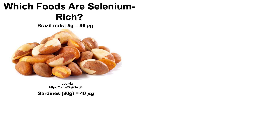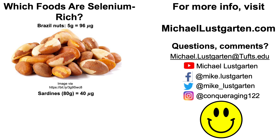As for selenium-rich foods: Brazil nuts are the best source, with about 19 micrograms per gram. I eat one large Brazil nut, about five grams per day, providing roughly 96 micrograms. I also eat 80 grams (one tin) of sardines daily, contributing about 40 micrograms. Between those two foods, I get about 70% of my daily selenium — around 180 to 190 micrograms per day, staying under that 200 microgram upper limit.